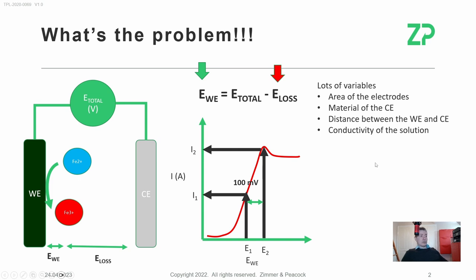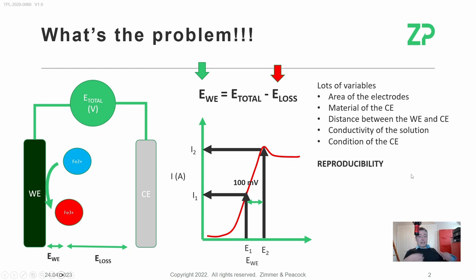The pH of the solution and the condition of the counter electrode also matter. Over time, electrodes can corrode or get fouled, and if the counter electrode is fouled, its resistance goes up and losses increase. So we're coming up with a list of things that can happen in a simple two-electrode cell which can really affect reproducibility. When you're trying to write scientific papers and compare materials, without this kind of reproducibility you can find it very hard to compare yourself to your peers.